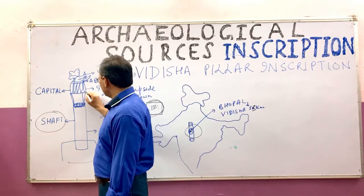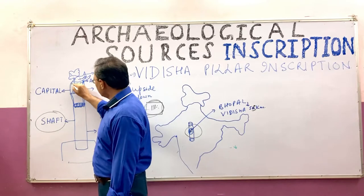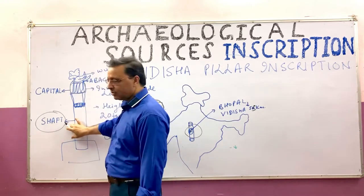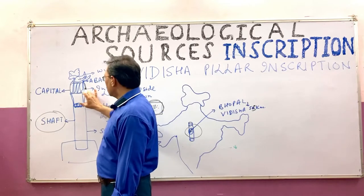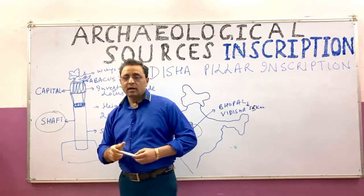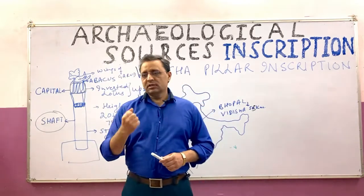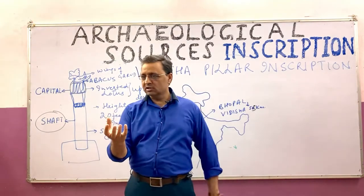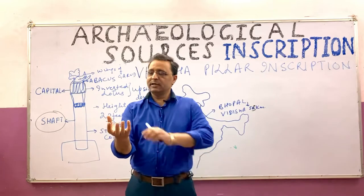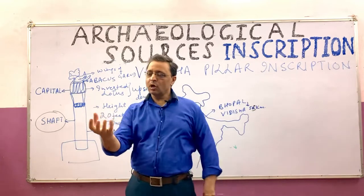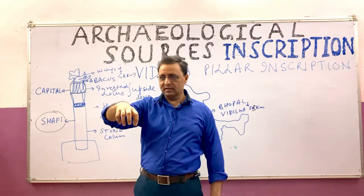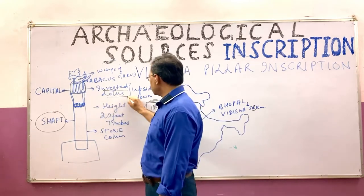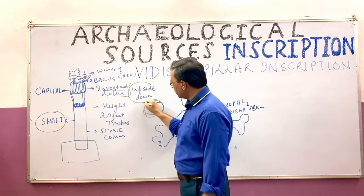The second portion of the pillar is called the capital. The capital portion features what is called an inverted lotus — a lotus placed upside down. This inverted lotus design forms the top section of the pillar, above the shaft.